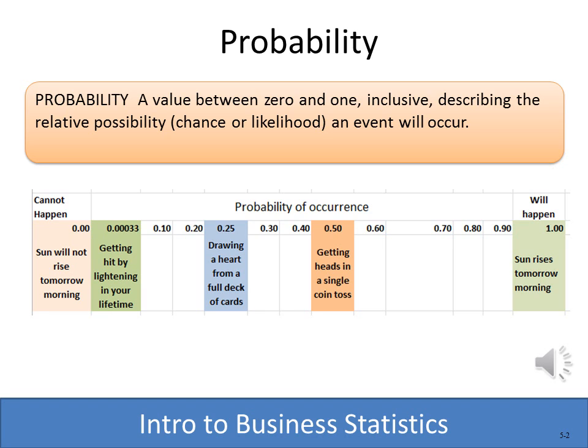If you look at the little chart that we have here, we have a zero probability that the sun will not rise tomorrow.